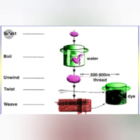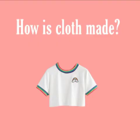Now it is spun into yarn on bobbins, yaani inko reel mein spun kiya jaata hai, aur phir isse silk cloth banane ke liye use kiya jaata hai. Silk cloth is used for making silk sarees and is also used for embroidery.